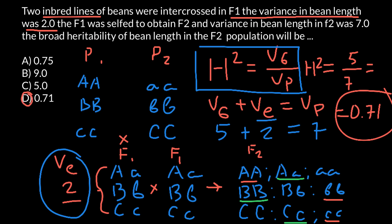It is important to know this number because it tells us whether we can use certain plants for selection purposes. You cannot use inbred line plants for selection, because all plants are genetically the same — you won't get any results selecting for certain traits. The same is true for Parent 2. But for F2 generation, where we see de-hybridization and every single plant is genetically different, we can use these plants for selection purposes.